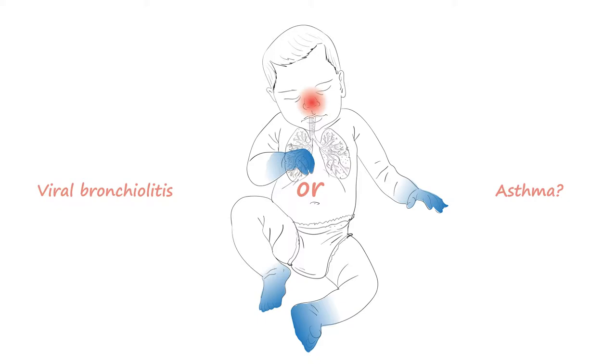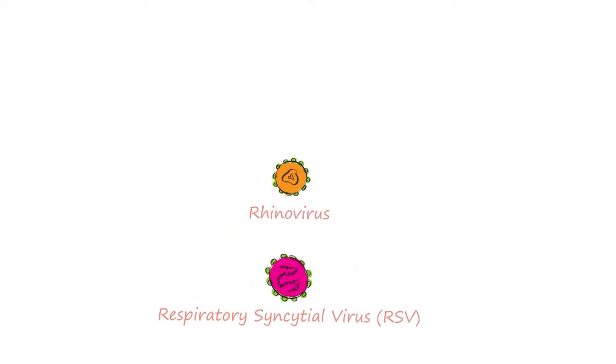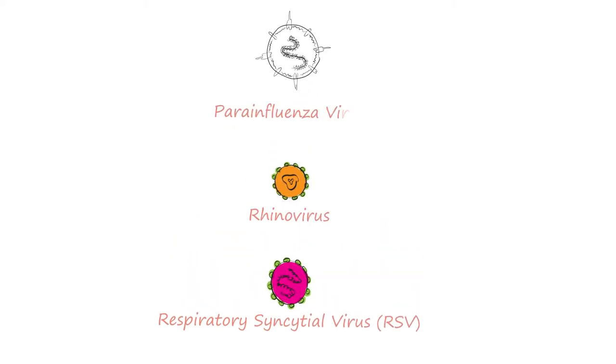In summary, bronchiolitis is usually seen in infants less than 2 years old, and asthma is seen in older children. The main causative agent is the respiratory syncytial virus. Other causes include rhinovirus and parainfluenza virus.